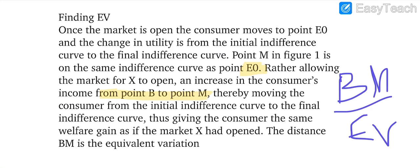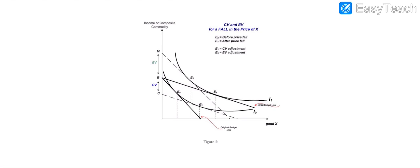The distance BM is from the initial indifference curve to the final indifference curve, thus giving the consumer the same welfare gain as if the market has opened. This BM is the equivalent variation. This is the diagram which is explaining this concept.